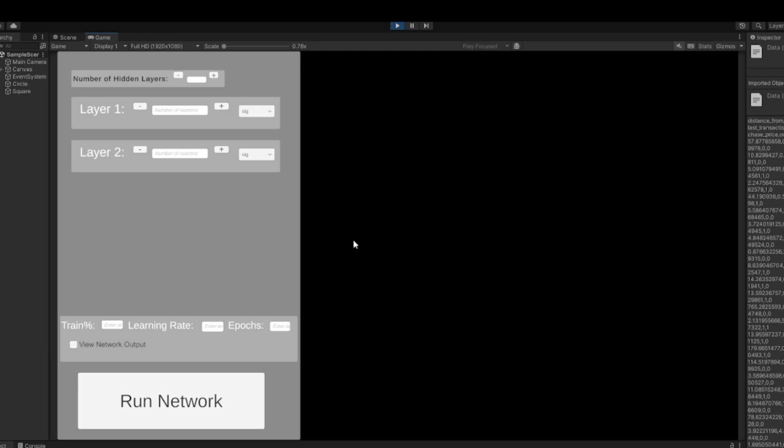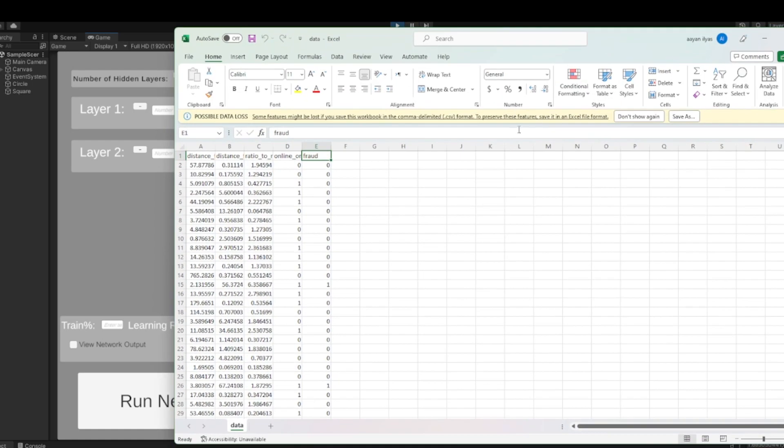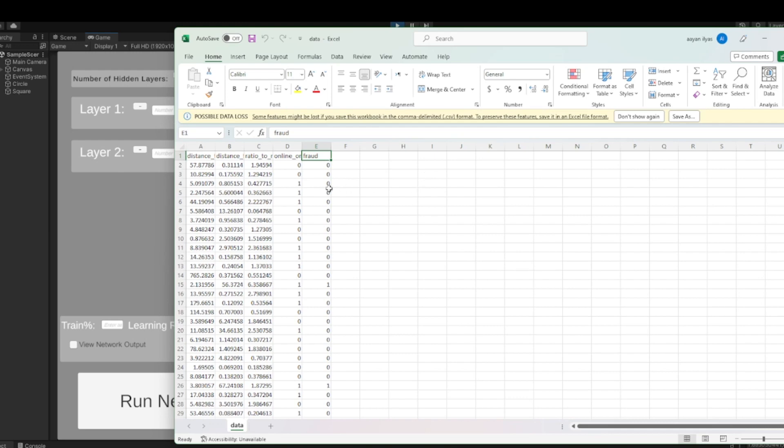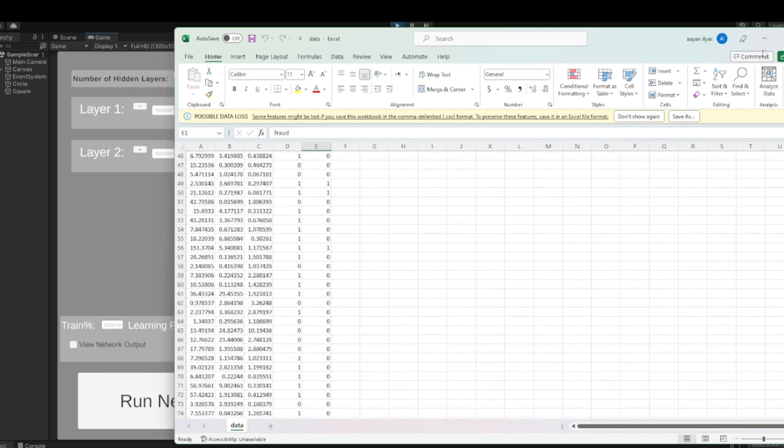To better help understand how the neural network works, I made an app that helps visualize the neural network. And it uses Python as a back-end and Unity and C-Sharp as the front-end. And I coded it from scratch, so I didn't use any libraries except Pandas to help read the dataset file that's being trained, or that's training the neural network. The neural network is being used to detect if a credit card is fraudulent or not based on four input data points and a zero and a one to determine if it's fraud or not.